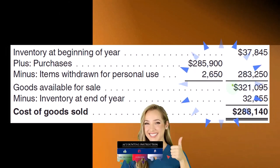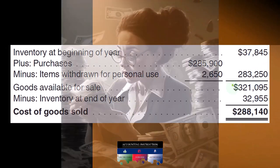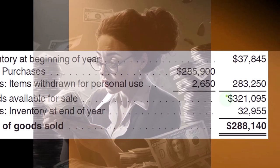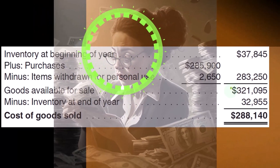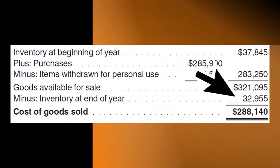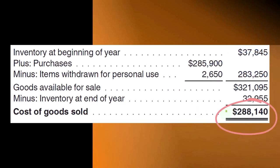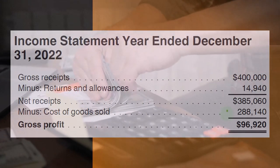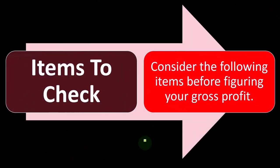Adding beginning inventory ($37,845) and net purchases ($283,250) gives goods available for sale of $321,095. This is the amount we would have had if we had never sold any inventory all year — an imaginary stockpile for the entire year as one point in time. Subtracting ending inventory — the unsold goods in dollars — of $32,955 gives cost of goods sold of $288,140, matching the income statement figure.